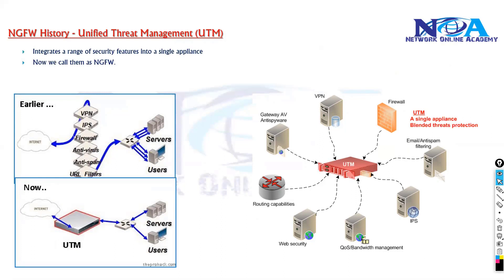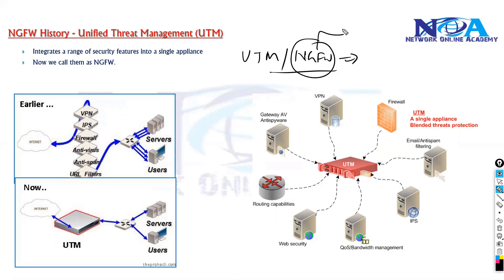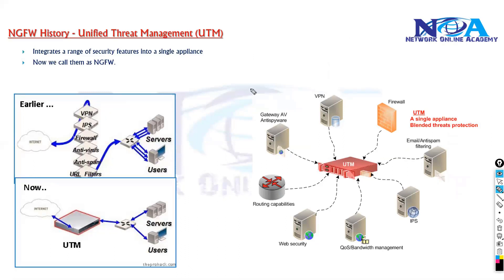Before we proceed, we need to understand a bit of history about next generation firewalls. Earlier we used to have something called Unified Threat Management. UTM and next generation firewalls are kind of interchangeable terms. Initially it was called next generation UTM, and next generation firewall is more of a marketing term for current generation firewalls. UTM refers to a single security solution — a single device — which provides multiple security functions at one point of your network.